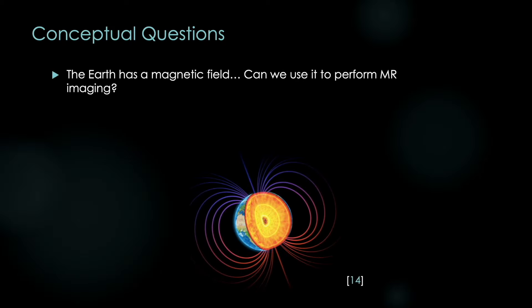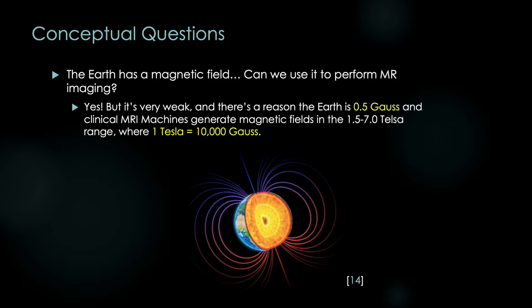This is a kind of fun one. The Earth has a magnetic field. Can we use it to perform MR imaging? Why not, right? We're in a magnetic field right now. We're standing on the Earth. So the answer to this is actually yes, but you have to remember that the Earth's magnetic field is very weak. And there's a reason the Earth is 0.5 Gauss. That's the measurement of strength of a magnetic field. And a clinical MRI machine generates a magnetic field in the 1.5 to 7 Tesla range, where one Tesla equals 10,000 Gauss. So our MRI machines are about four orders of magnitude greater than the Earth's magnetic field.